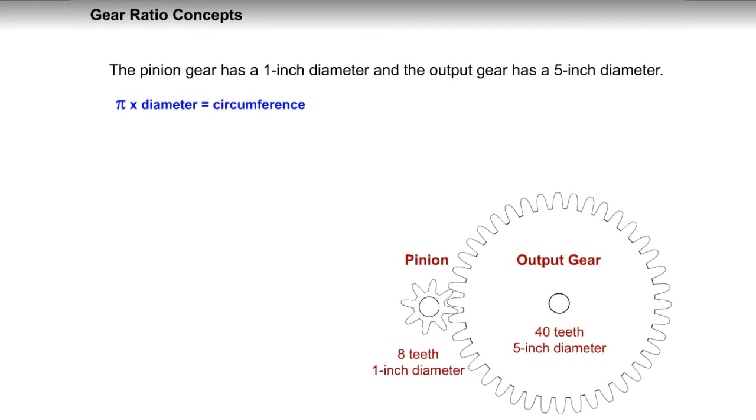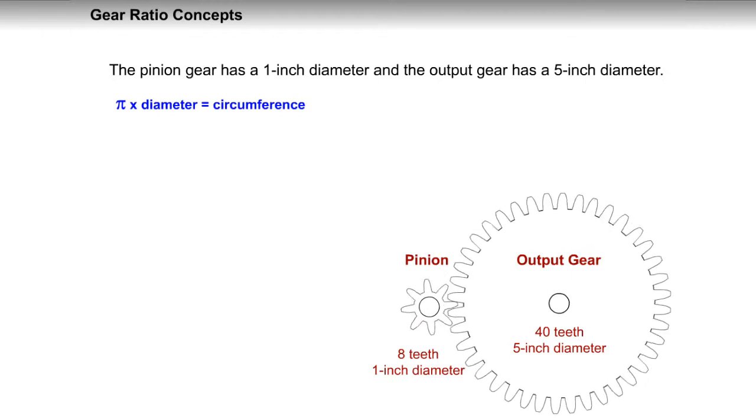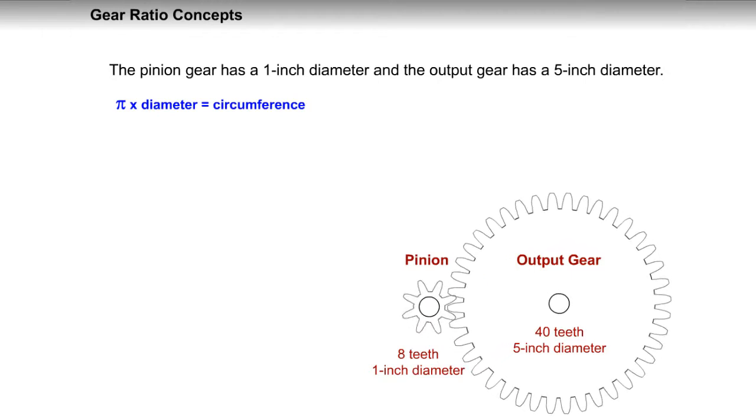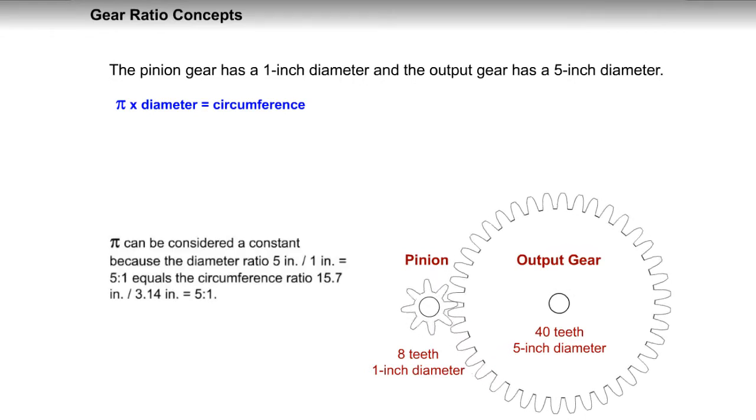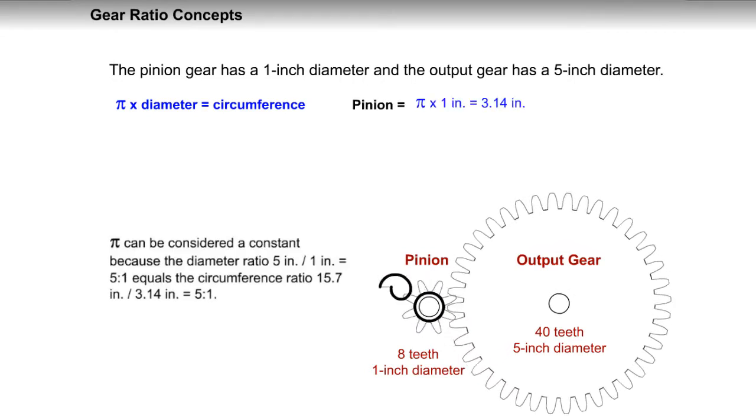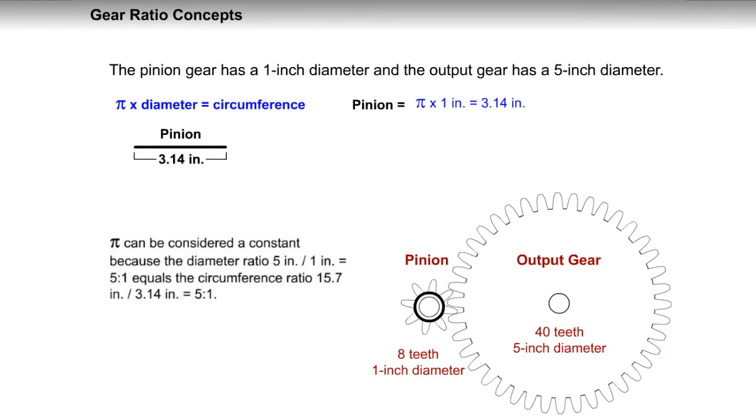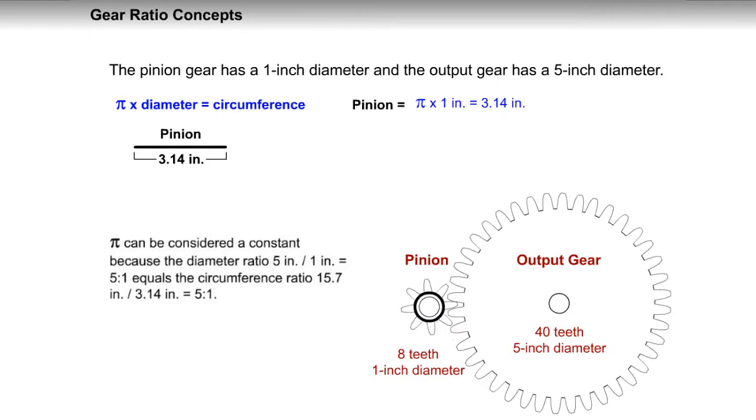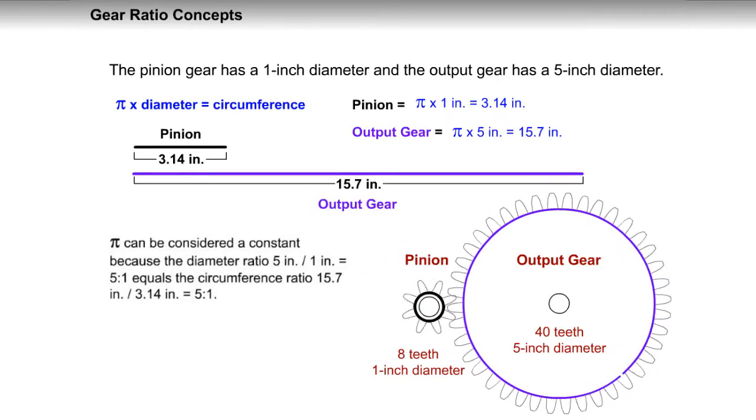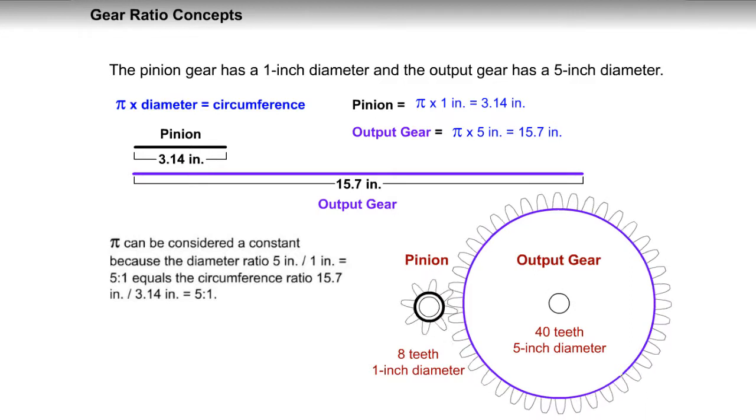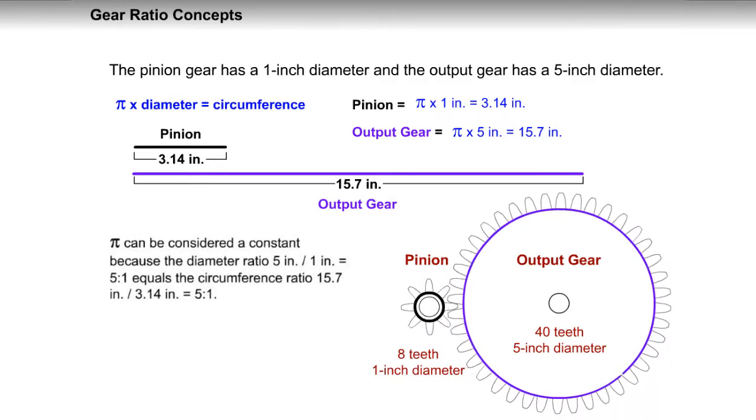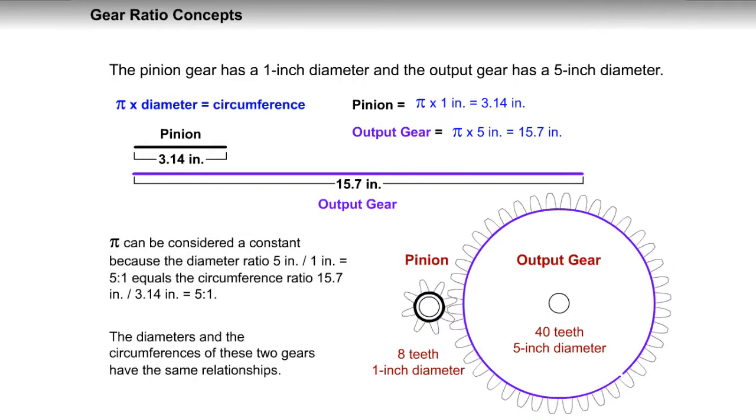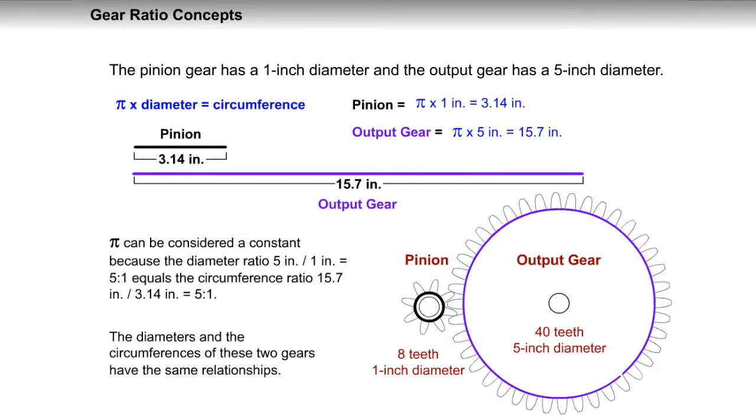The pinion gear has a 1 inch diameter and the output gear has a 5 inch diameter. Pi can be considered a constant because the diameter ratio 5 inches to 1 inch equals 5 to 1 which equals the circumference ratio 15.7 inches to 3.14 inches which equals 5 to 1. The diameters and the circumferences of these two gears have the same relationships.